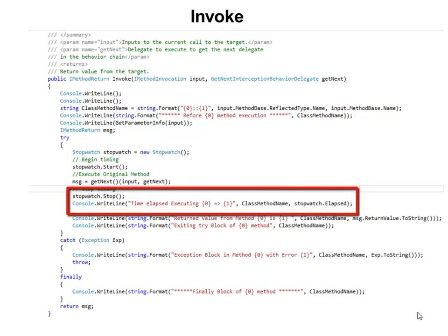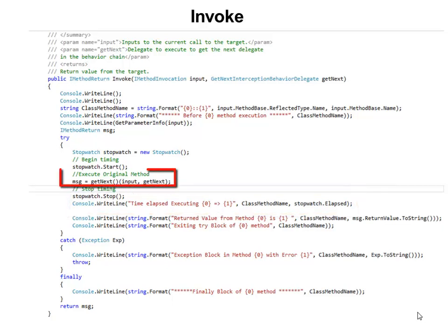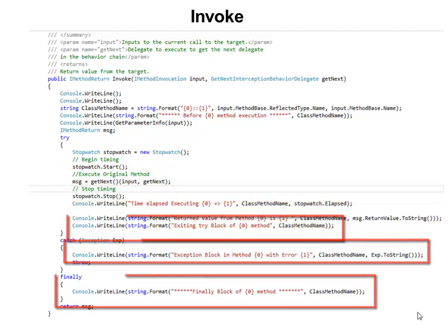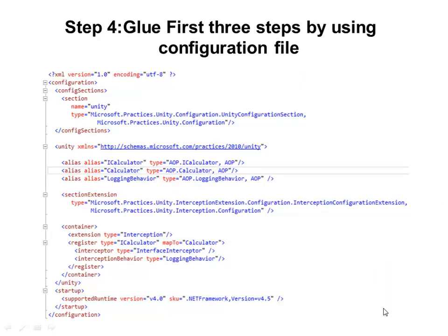Then I am logging the total execution time for the method. Next I am logging the return parameter. The remaining logging is the same as it was in the Add method. The last step is to register the client for interception behavior. The registration can be done either through fluent syntax or through a configuration file. In our example we are going to use the configuration file.